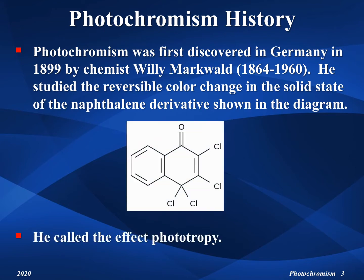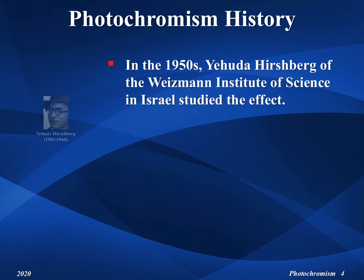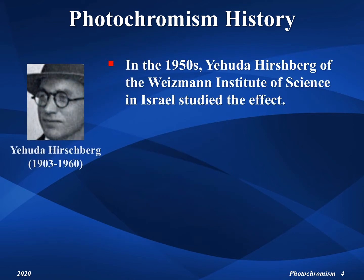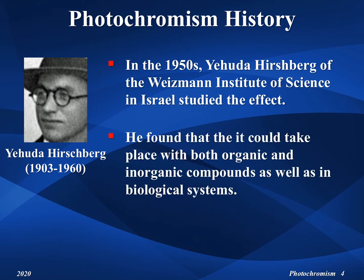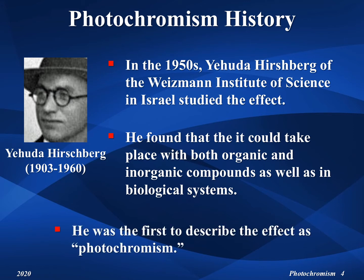Markwald called the effect phototropy. In the 1950s, Yehuda Hirschberg of the Weizmann Institute of Science in Israel studied the effect. He found that it could take place with both organic and inorganic compounds as well as biological systems. Dr. Hirschberg was the first to describe the effect as photochromism.